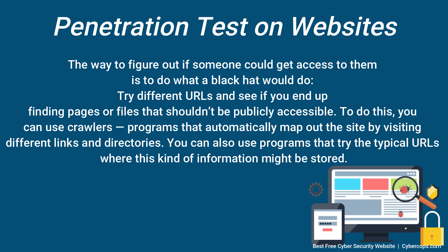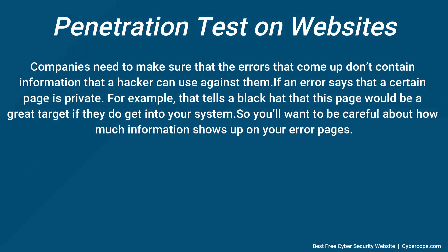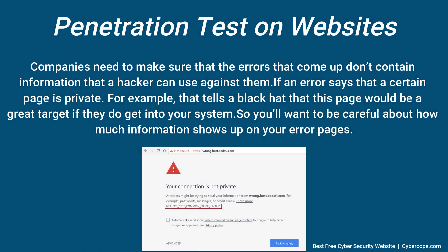To do this, you can use crawlers — programs that automatically map out the site by visiting different links and directories. You can also use programs that try the typical URLs where this kind of information might be stored. If the crawler lands on an error page, that can be important too. Companies need to make sure that the errors that come up don't contain information a hacker can use against them. If an error says that a certain page is private, for example, that tells a black hat that this page would be a great target if they do get into your system. So you'll want to be careful about how much info shows up on your error pages.